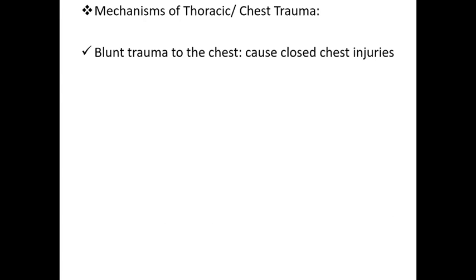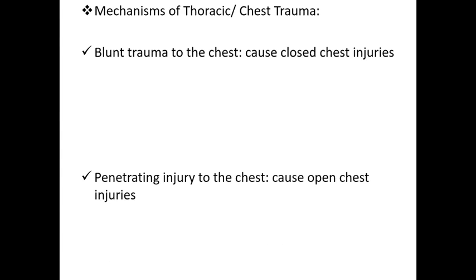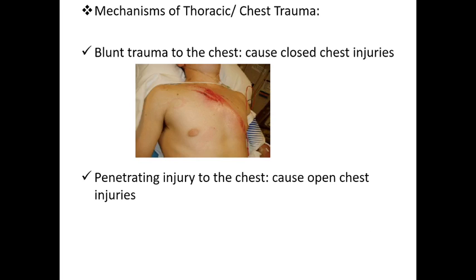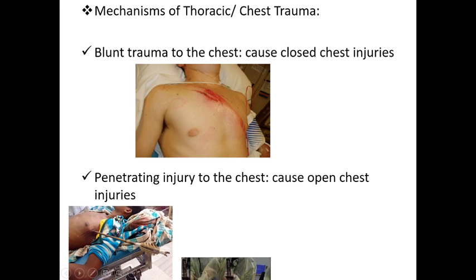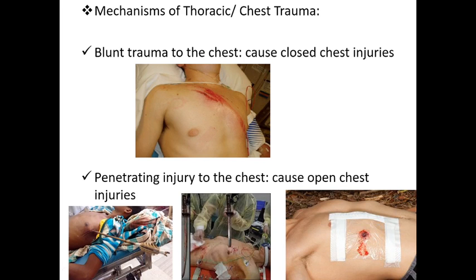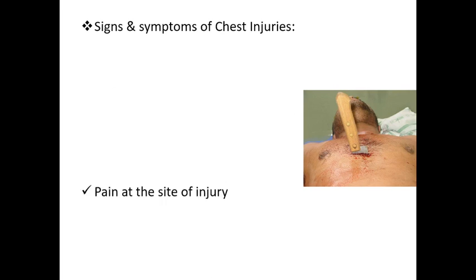The mechanisms of thoracic trauma are blunt trauma — where the skin is not open but the chest wall is injured from outside, causing a closed chest injury — and penetrating trauma, where an object pierces through the chest wall.